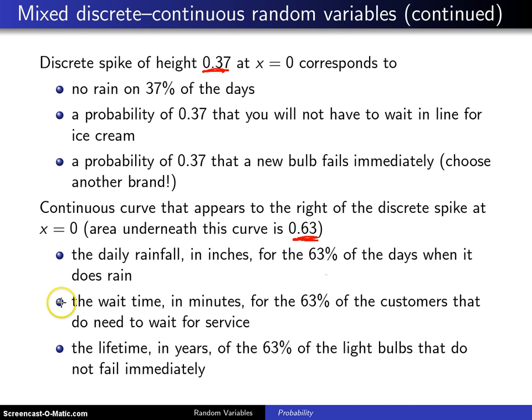In the queuing example, that would correspond to the wait time for those 63 percent of the customers that do have to wait for service. And in the case of the light bulb, it corresponds to the lifetime for the 63 percent of the bulbs that do not fail immediately.